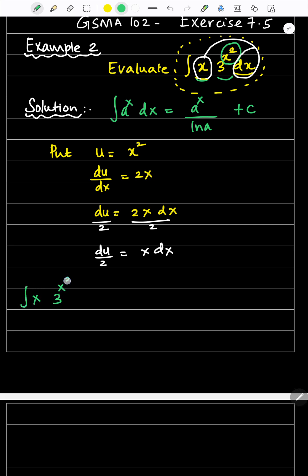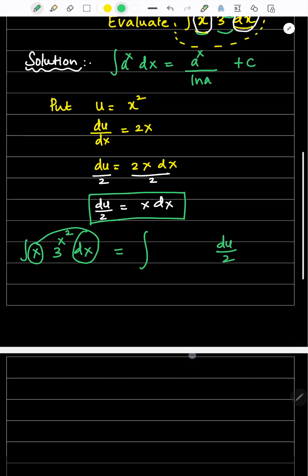Integral of x times 3 to the power x squared dx equals integral... This x dx, I can write as du divided by 2 according to this formula. And 3 to the power x squared, I am going to write as 3 to the power u.